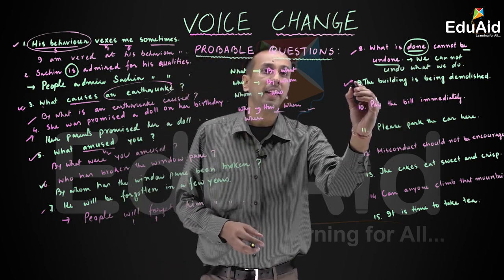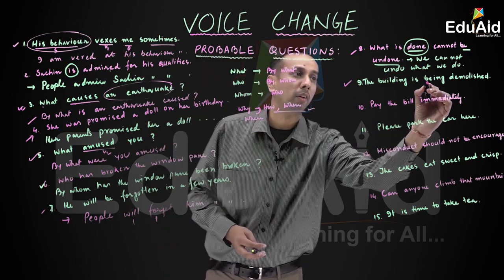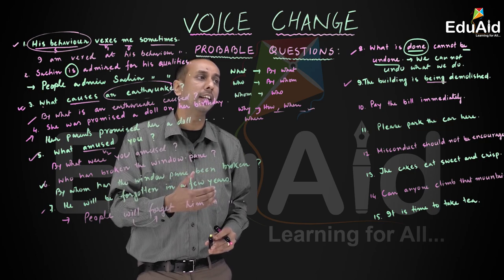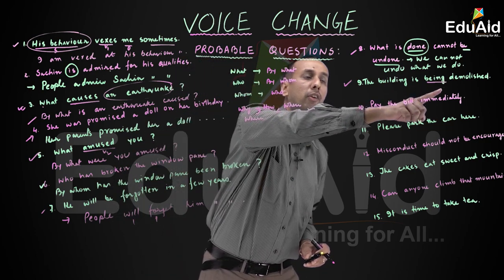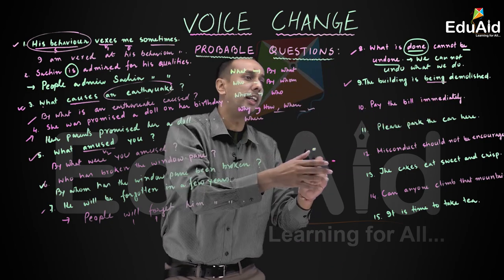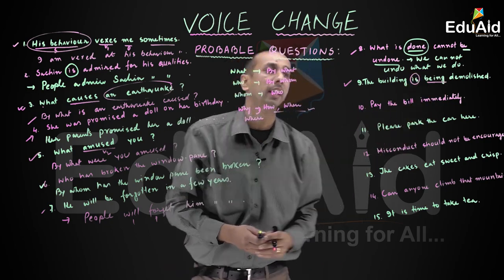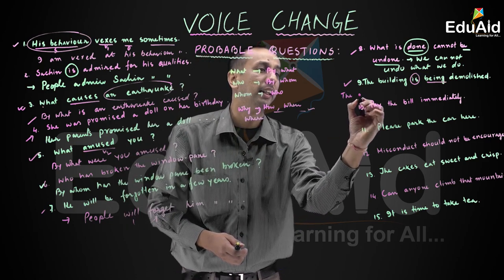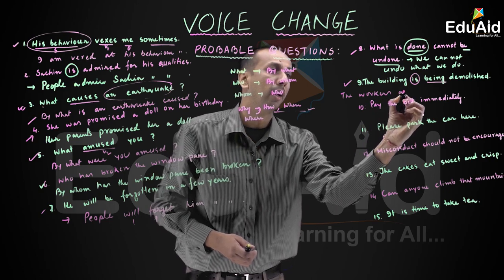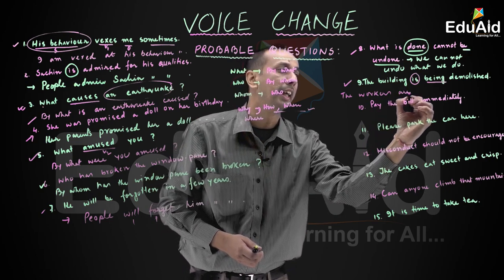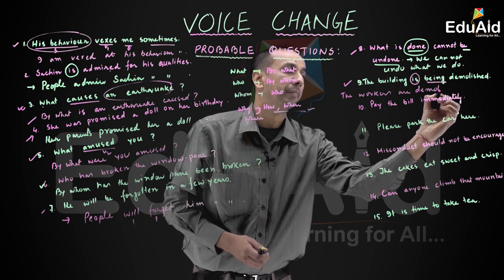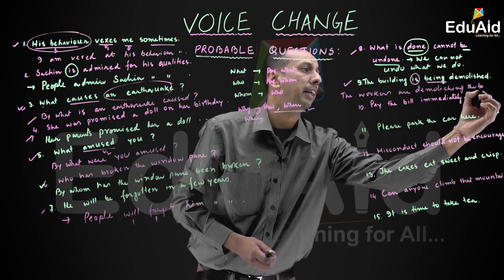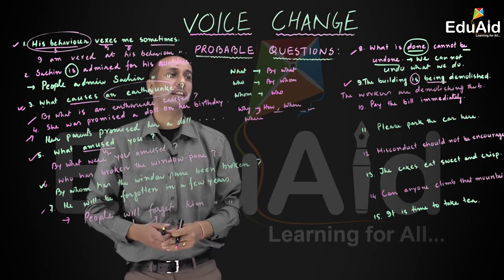Question number nine: 'The building is being demolished.' The word 'being' indicates progressive (continuous) form; 'is' indicates present tense. We supply 'the workers' as the agent, using plural auxiliary 'are.' The active form is: 'The workers are demolishing the building.'